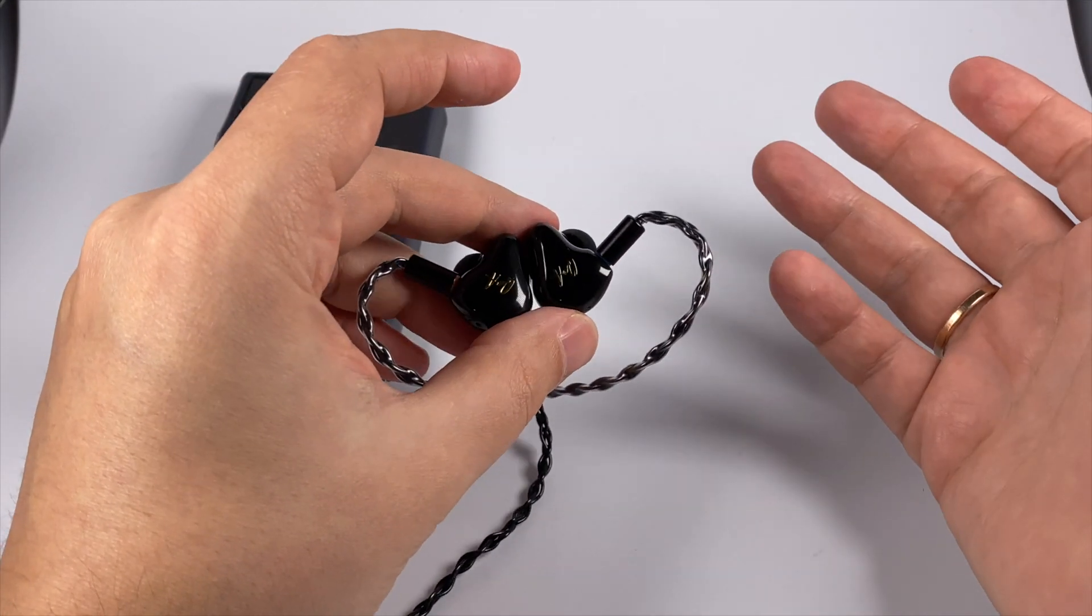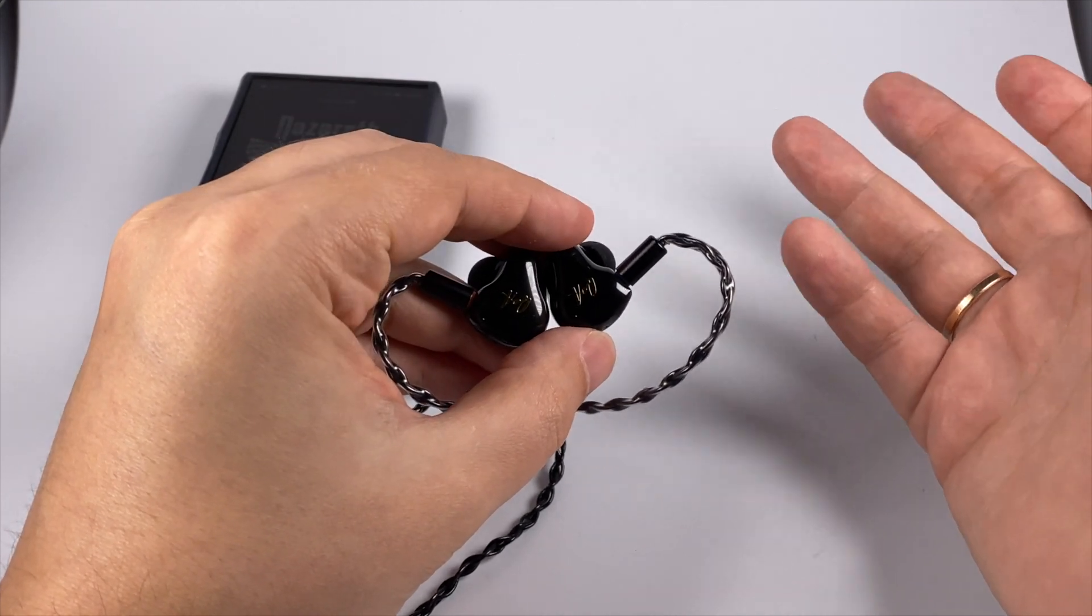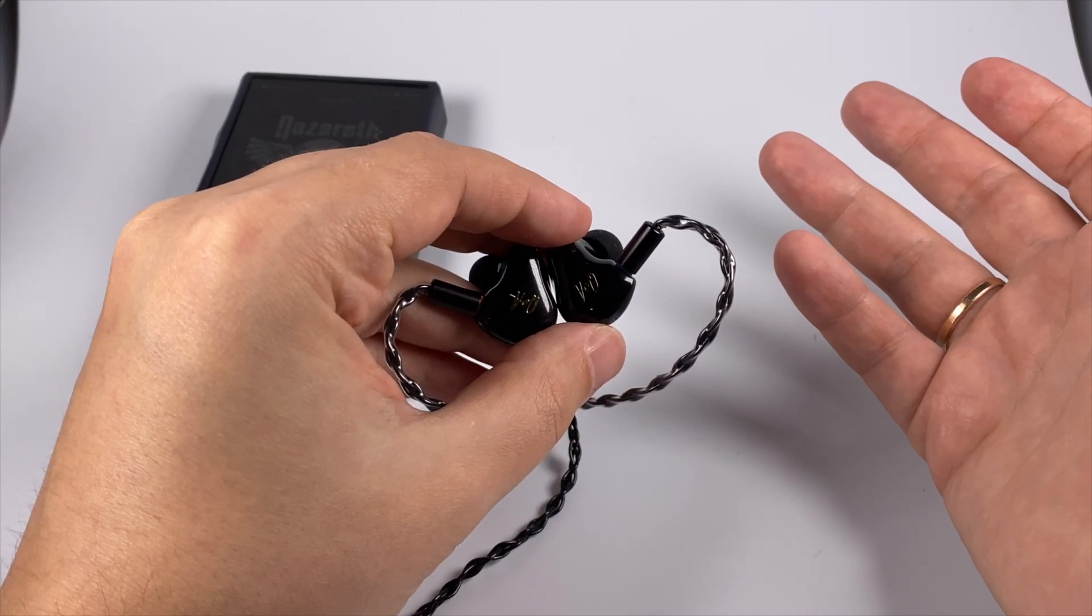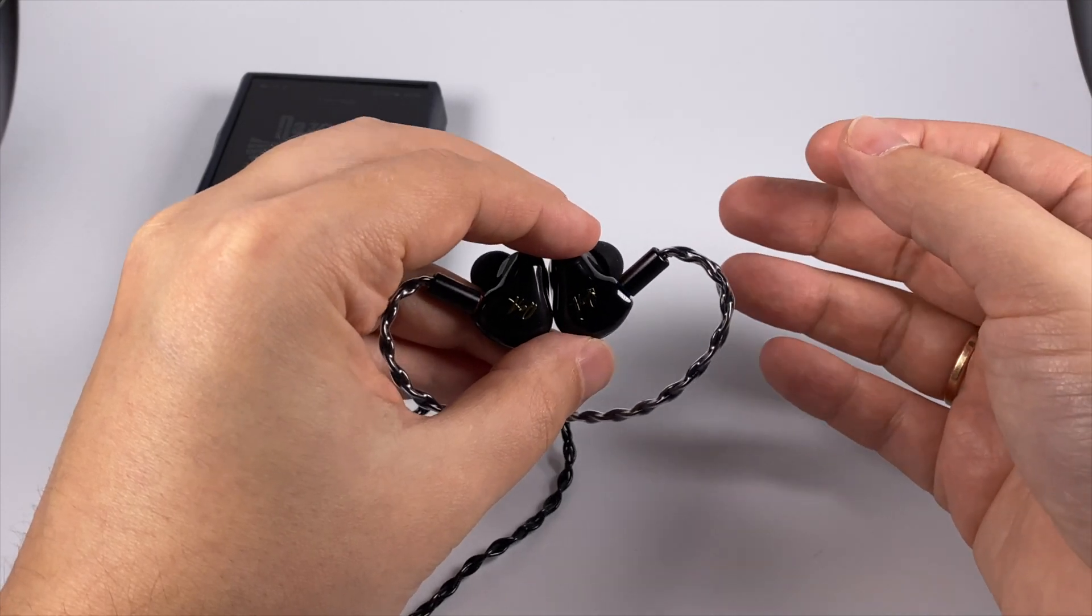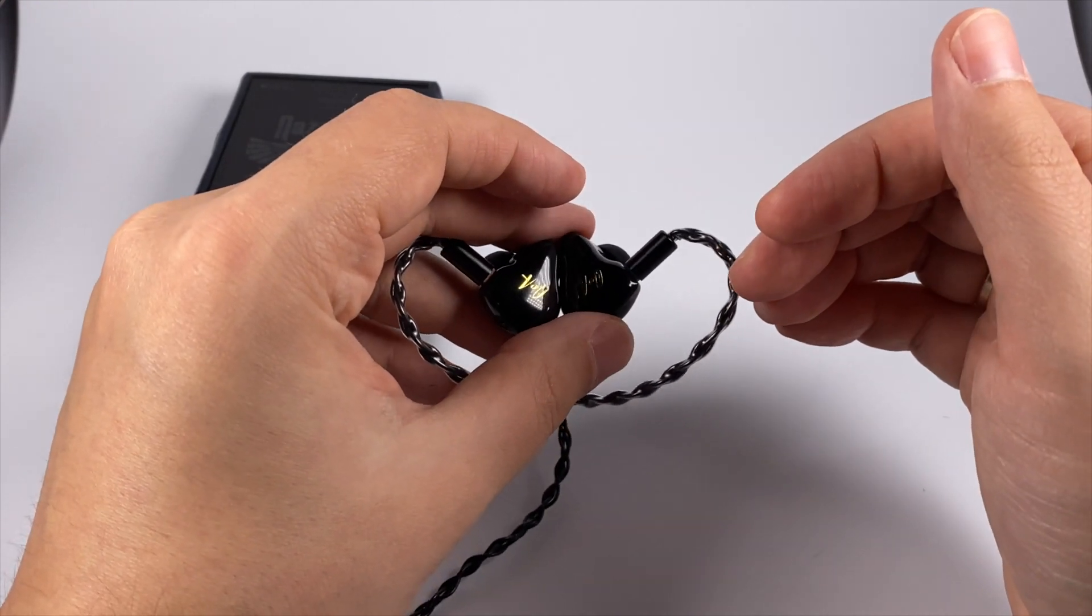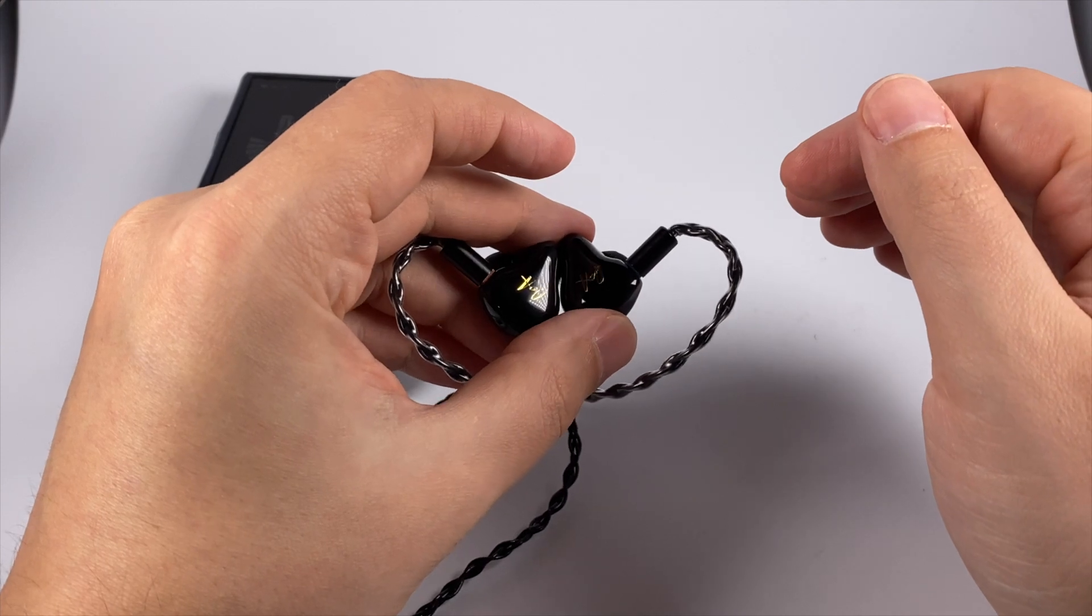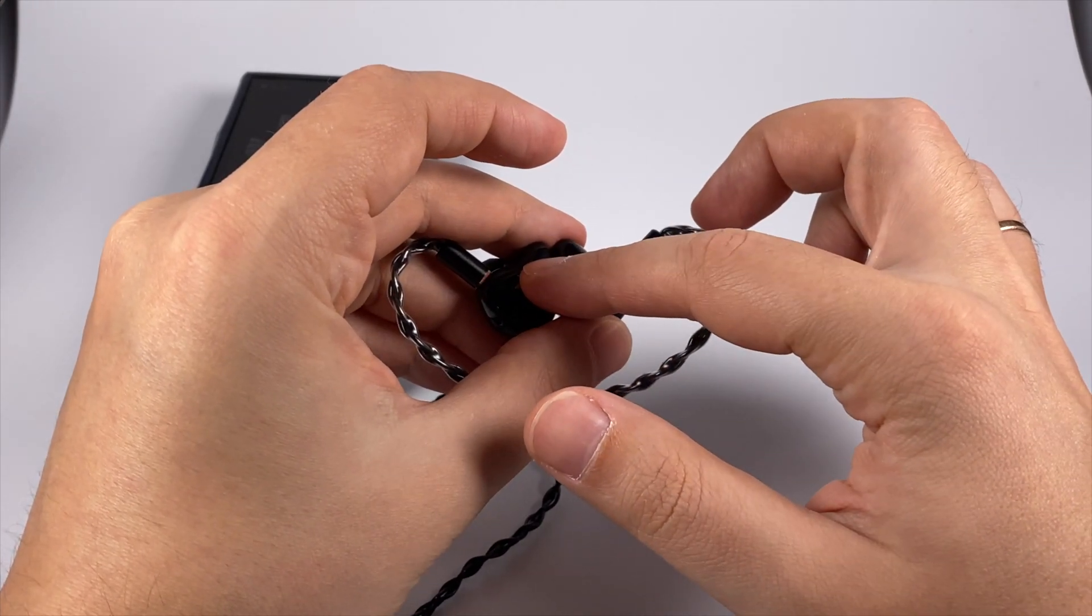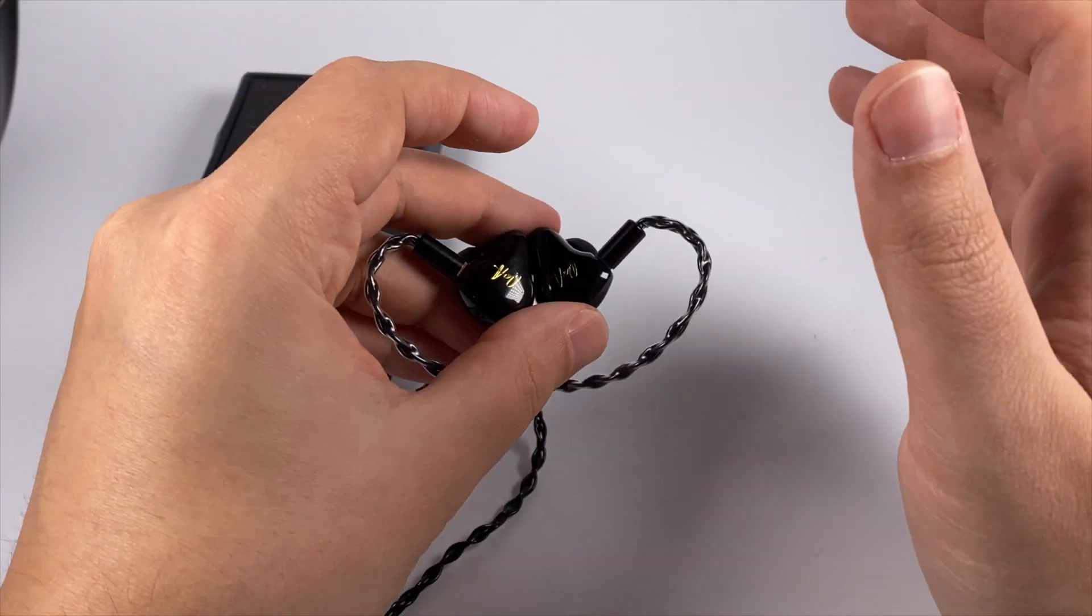And speaking about the comparison, just a pair of models to give a basic idea, so Fiio F9 Pro, they are sharper with noticeably more treble, with more treble peak, and with a bit more V-shapedness in signature, while this one has less treble accent, and a bit warmer mids, and actually not a bit, noticeably deeper bass comparing with Fiio F9 Pro.